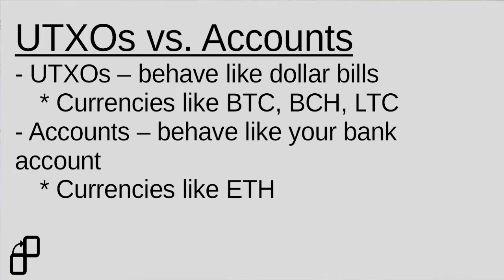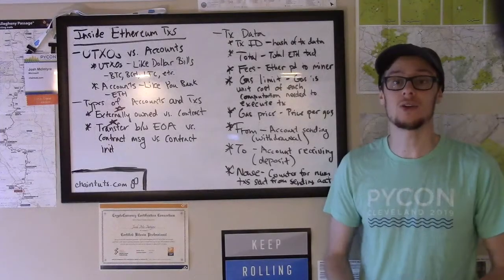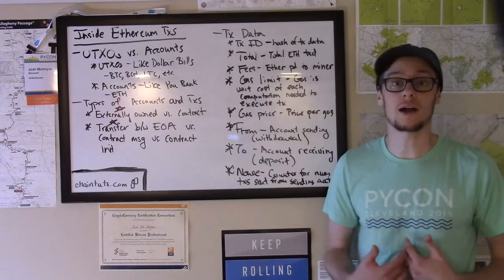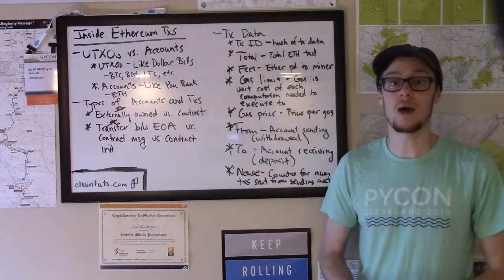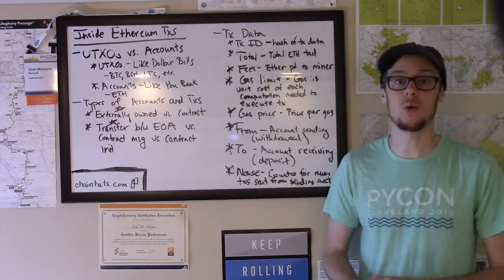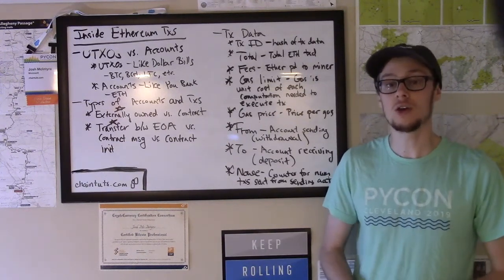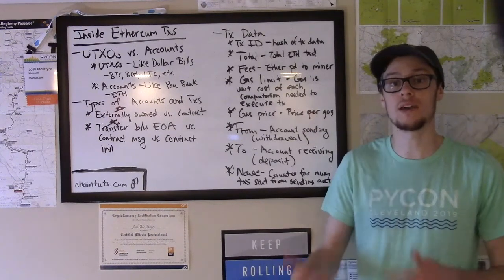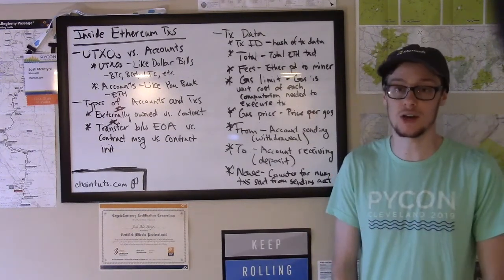So if you hand a cashier a $10 bill and you only need to spend $9, they'll give you back a dollar in change. On these blockchains, if you have a UTXO worth one Bitcoin and you only want to spend half a Bitcoin, you have to spend that whole Bitcoin UTXO and give your wallet back some change in the transaction.